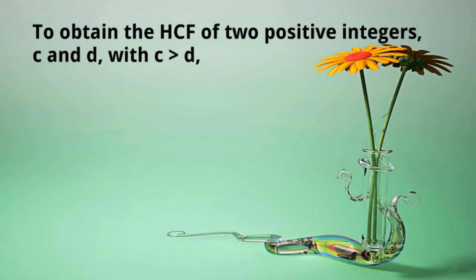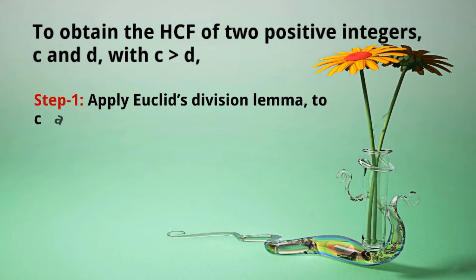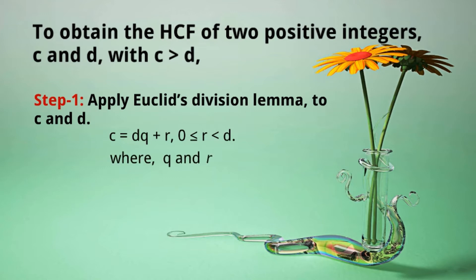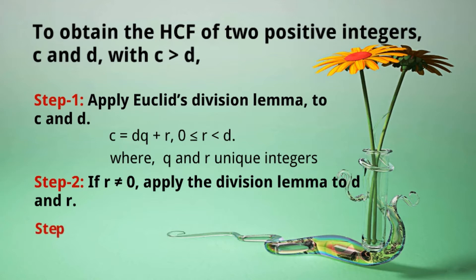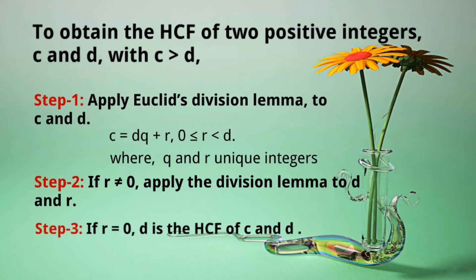To obtain the HCF of two positive integers c and d, where c is greater than d: Step 1 — apply Euclid's Division Lemma to c and d, giving c = dq + r, where r ≥ 0 and r < d, with q and r as unique integers. Step 2 — if r is not equal to 0, apply the division lemma to d and r. Step 3 — if r equals 0, then d is the HCF of c and d. Remember: if r is not equal to 0, we must continue the process until we get r = 0.